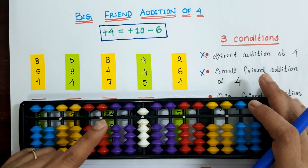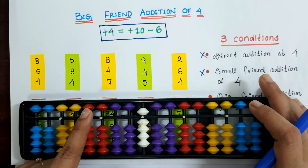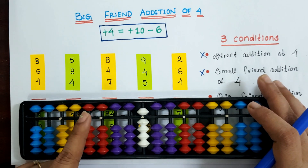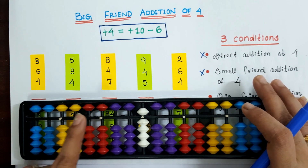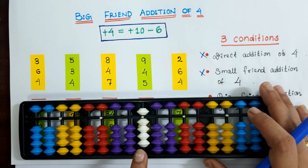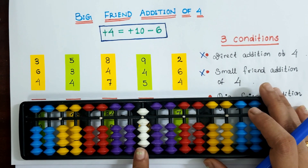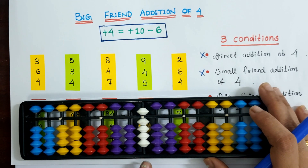Let me tell you when we can apply big friend addition of 4. The first condition is where we can't directly add 4 — in those situations where we don't have 4 more bits at the one slot. So we can't directly add 4 in that case.